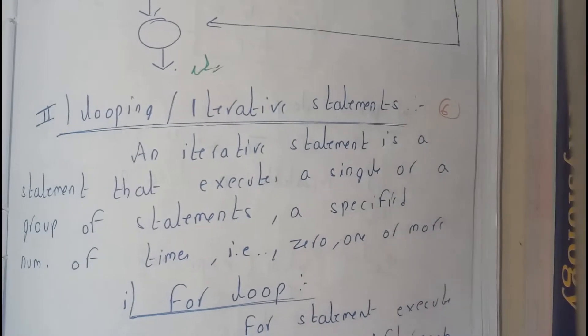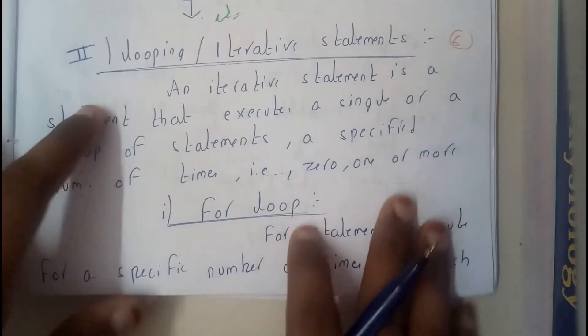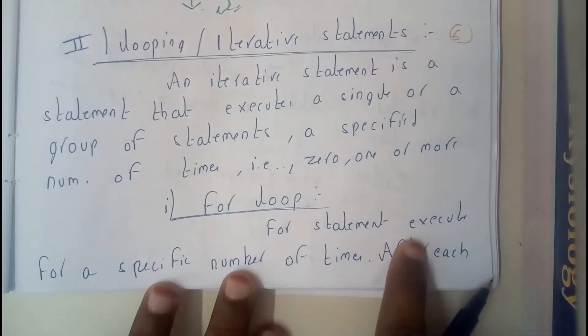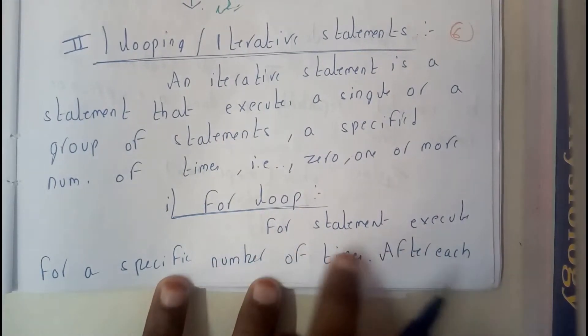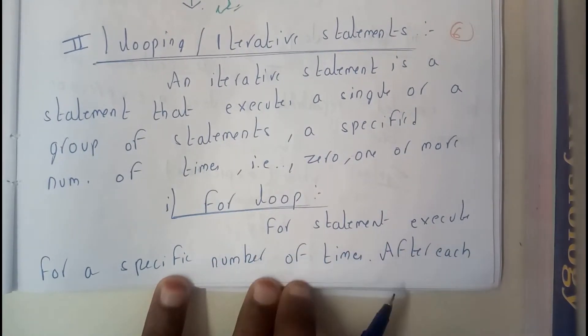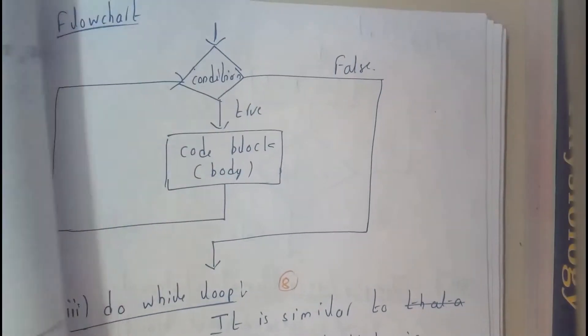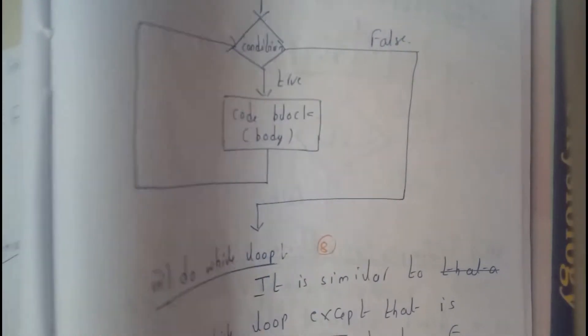for loop. This is one of the easiest concepts: the for loop. The for statement executes for a specific number of times. After each iteration or after each step, it is going to increment a particular number by one.